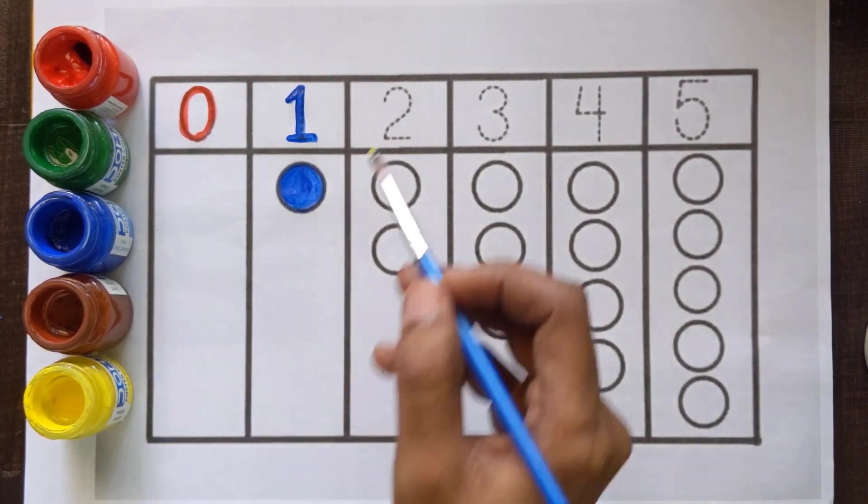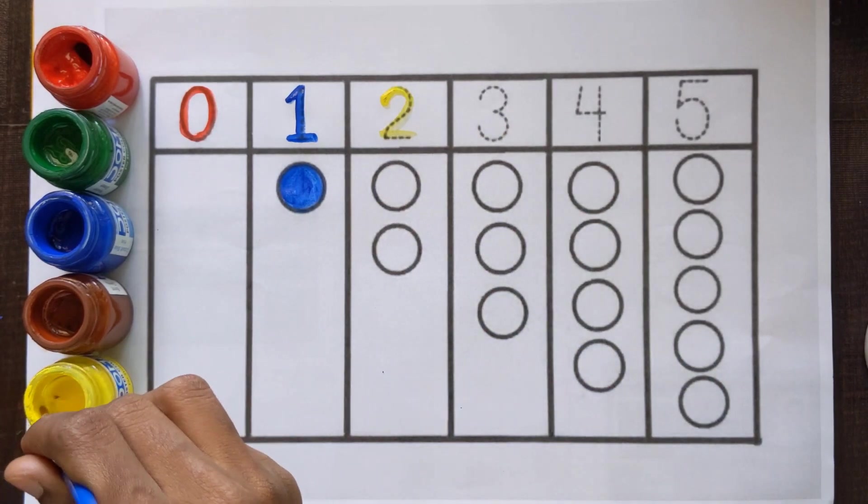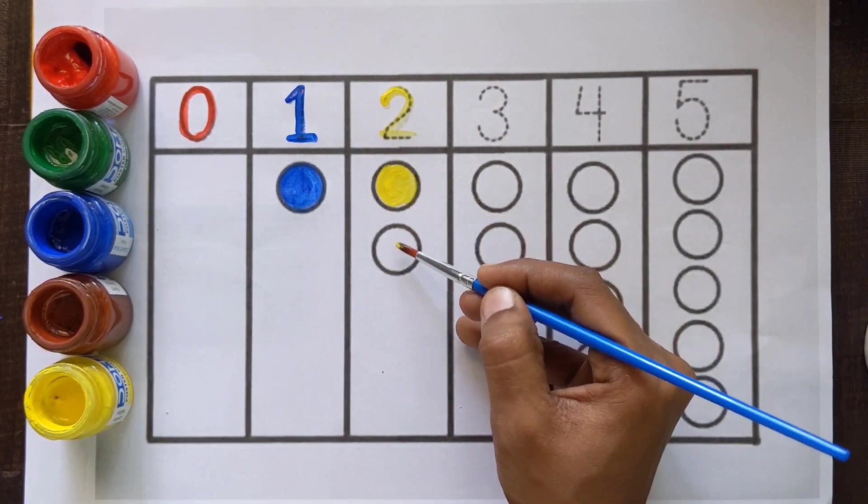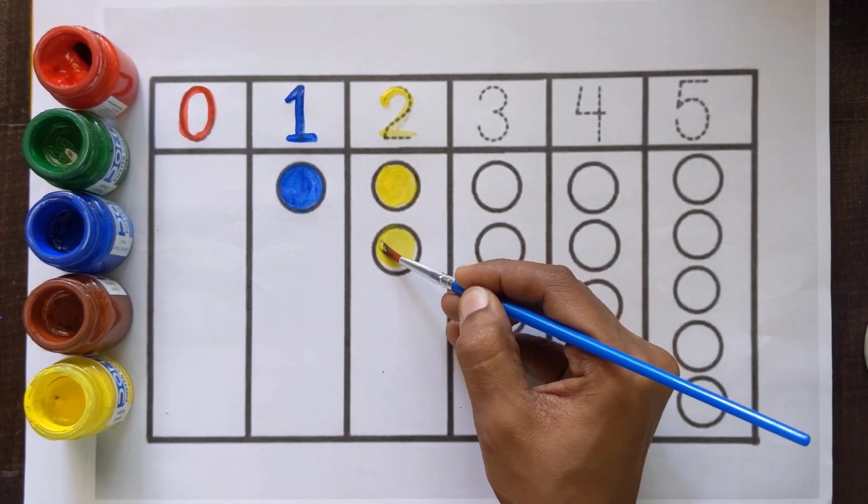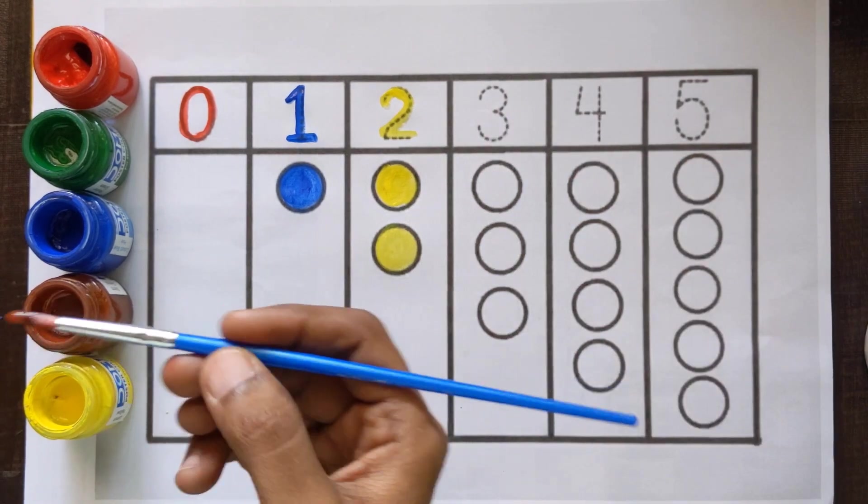Next number is number 2. Number 2, 1 and 2. 2 color balls with a yellow color. Number 3,